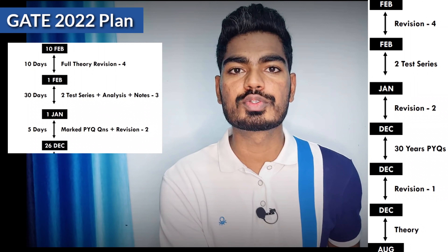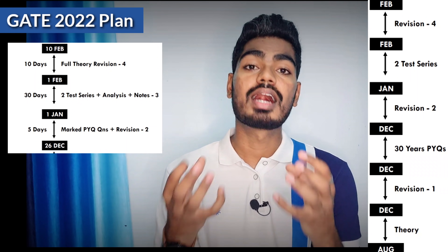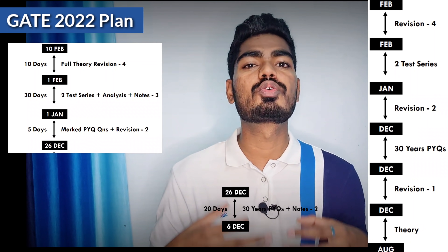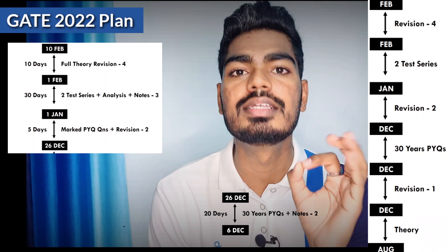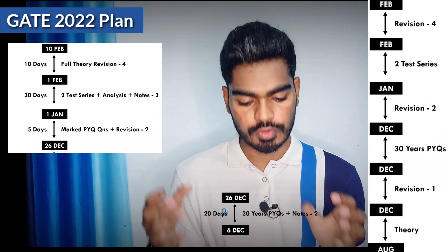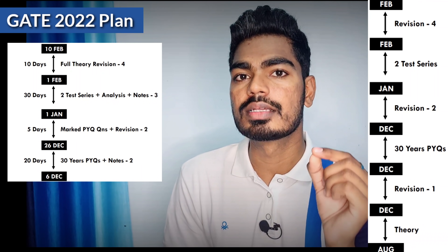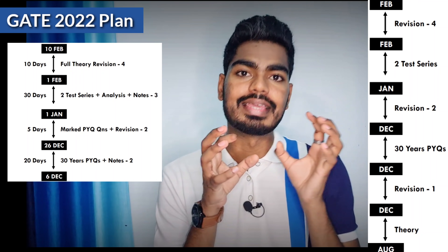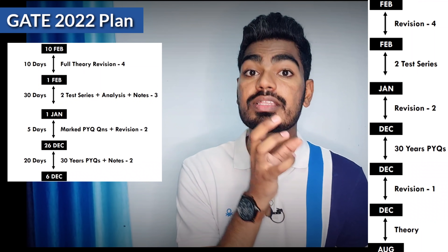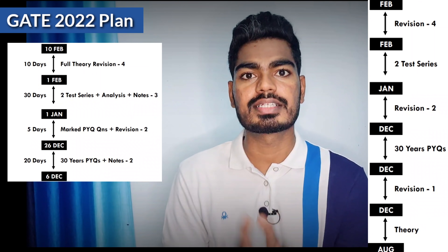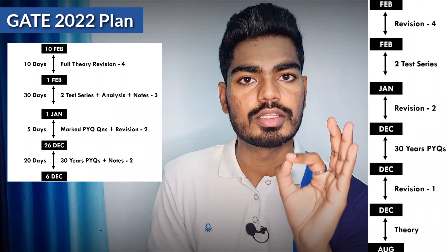Before that, we are going to solve previous questions. As discussed, 30 years of PYQs will take roughly 15 days, but we will give them 20 days at maximum. From 6th December to 25th December — 20 days — should be given to solving 30 years of previous questions with analysis and notes making. These 20 days can easily be utilized for solving 30 years of PYQs with notes making.